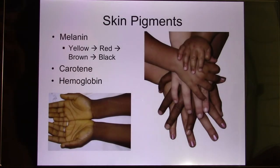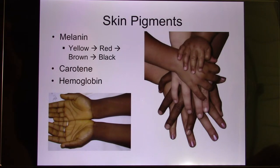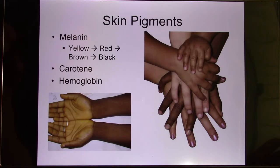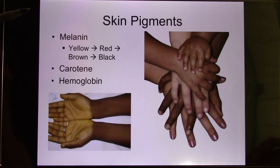Your skin tone is determined by skin pigments. Albinos have no pigments at all, and it's very dangerous because UV can directly go into their body and damage their cells — not just skin cells, but all cells. So they have to wear long sleeves in the summer because they have no protection.